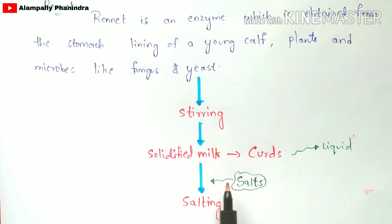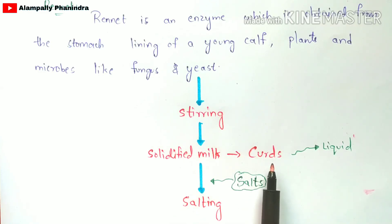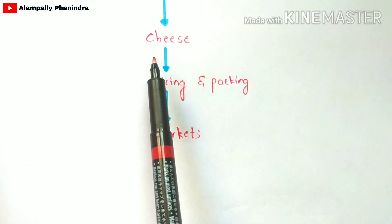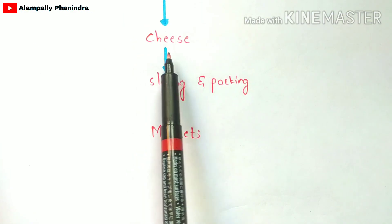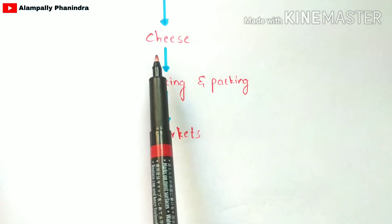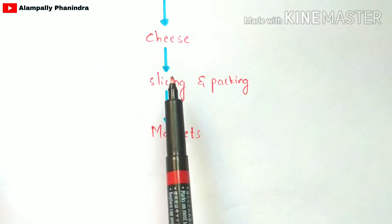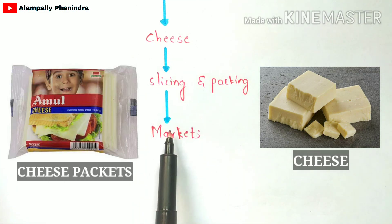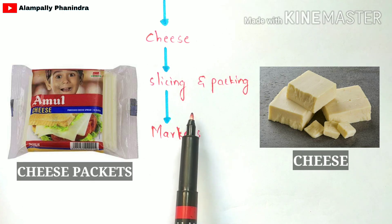To the curds, salts are added and that process is called salting. So to the liquid-free curd, salts are added — that is salting. Once the process of salting is done, it leads to the production of cheese. Then the heat supply is stopped, the cheese is removed, sliced into pieces, packed, and then supplied to the markets for human beings to consume.